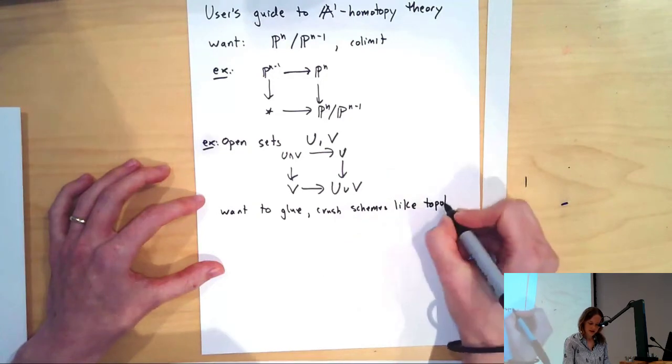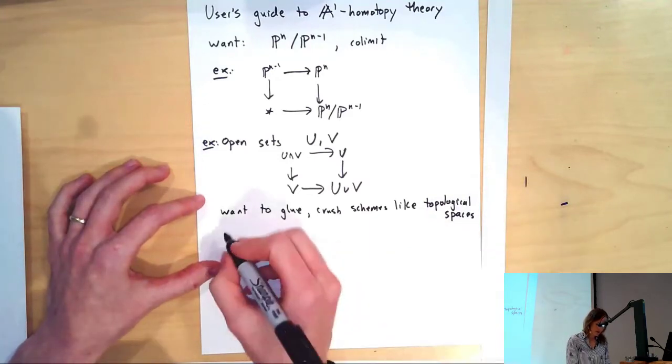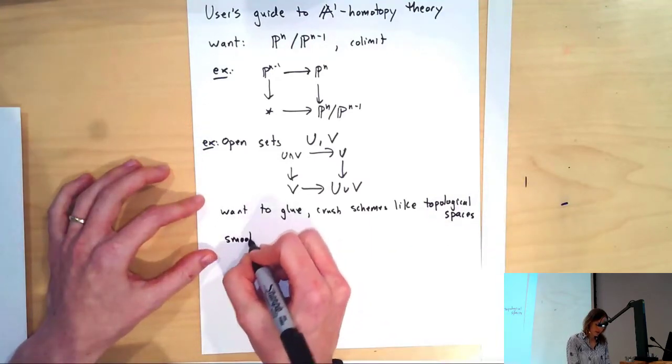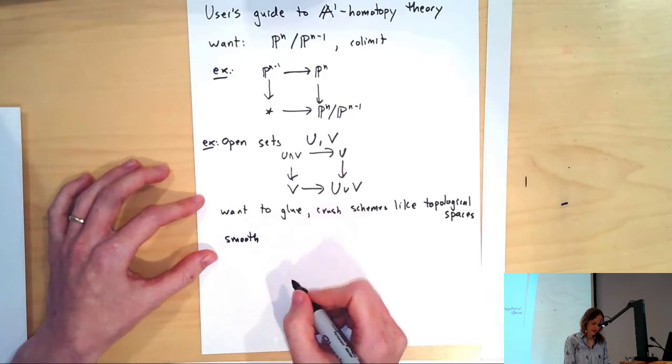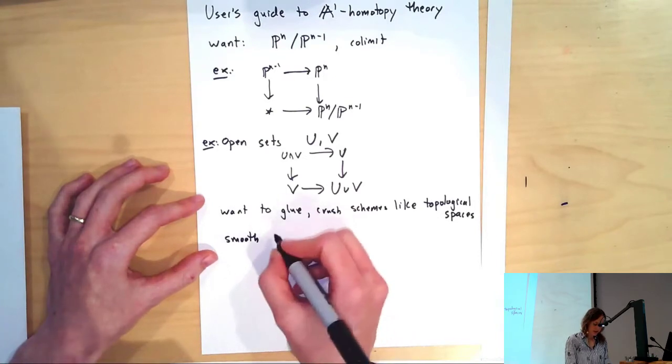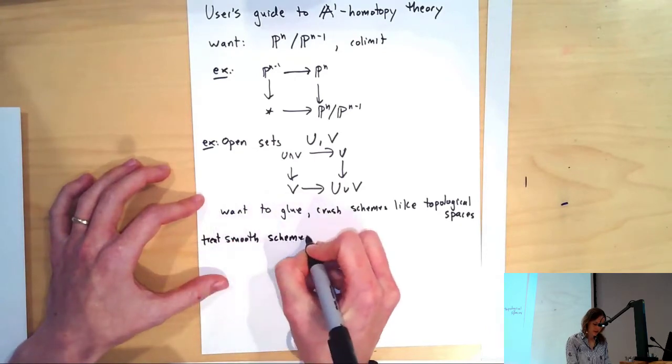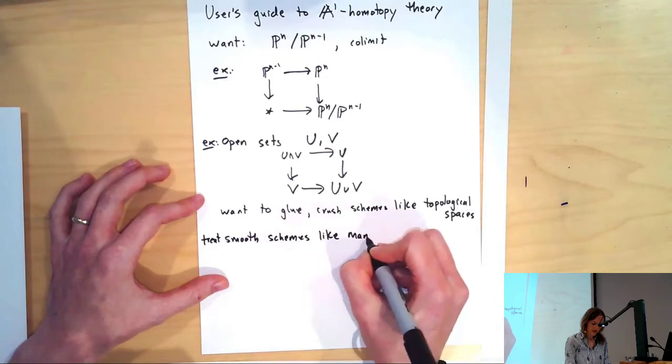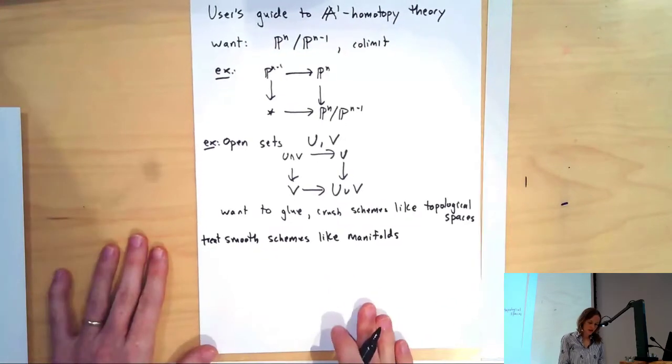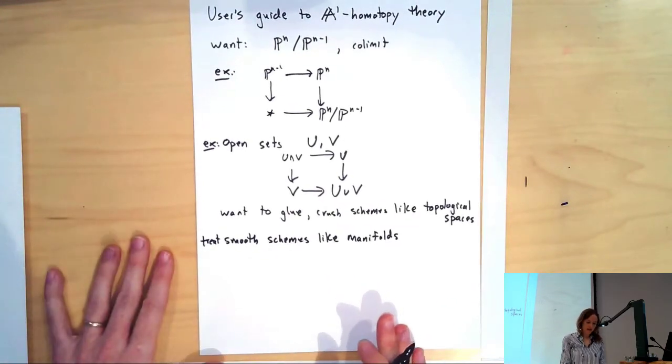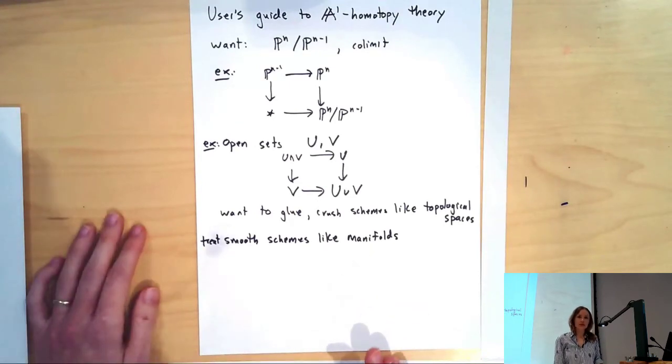We want to glue, crush schemes like topological spaces. This doesn't happen in schemes. And we also want smooth schemes to behave like smooth manifolds, having small neighborhoods around points that look like balls to do the degree construction. Treat smooth schemes like manifolds.